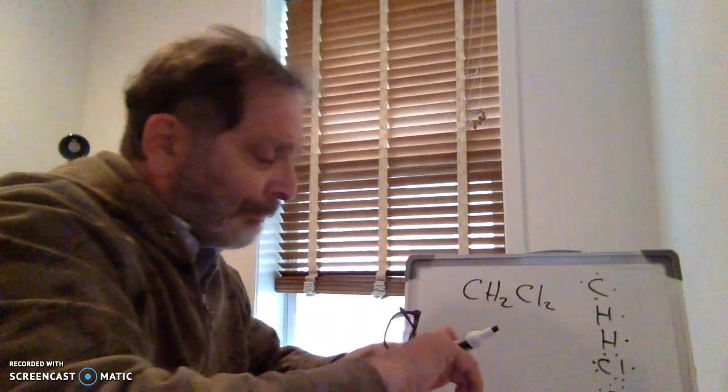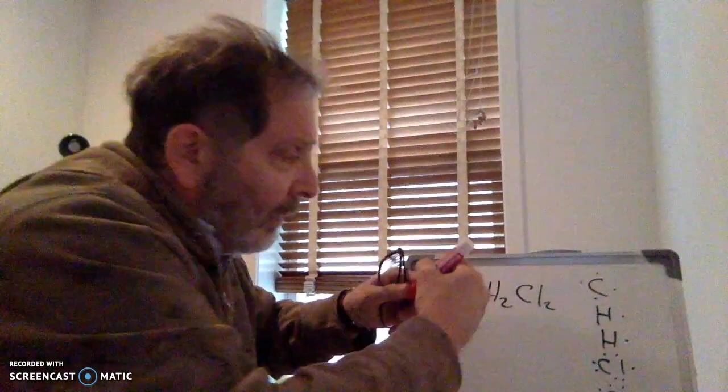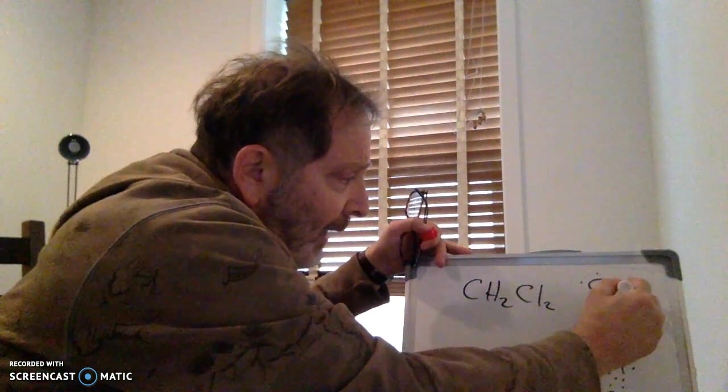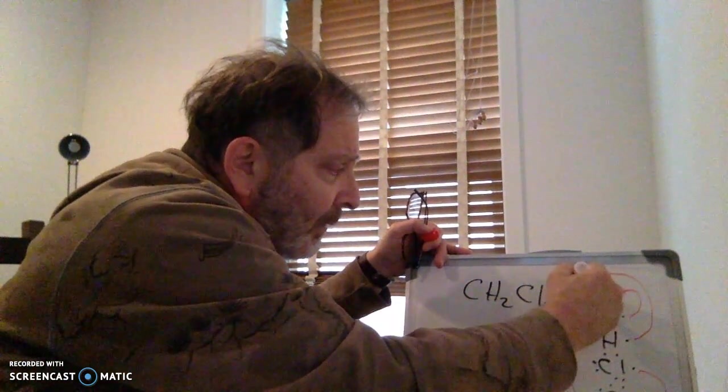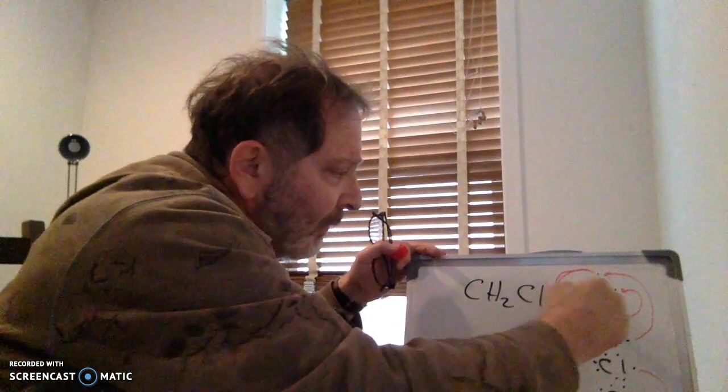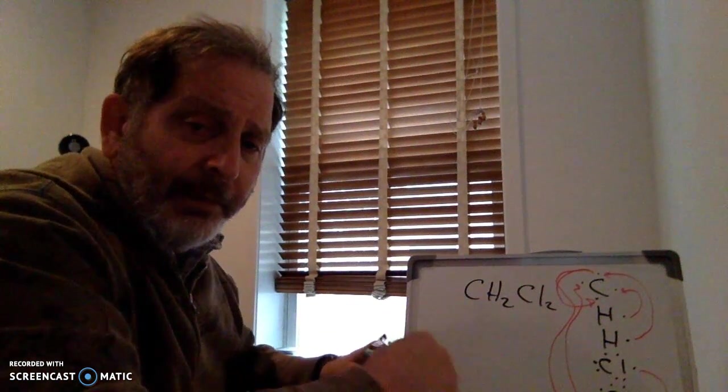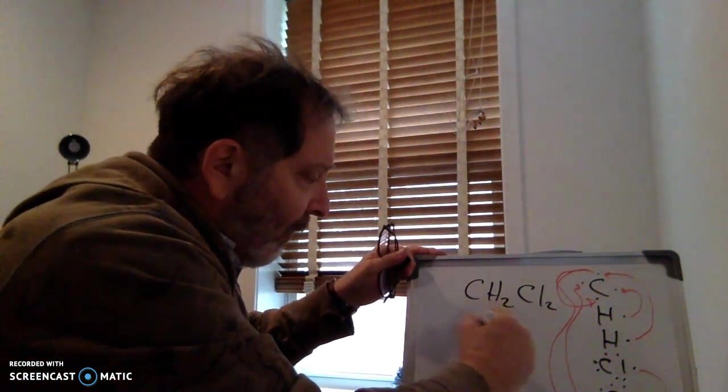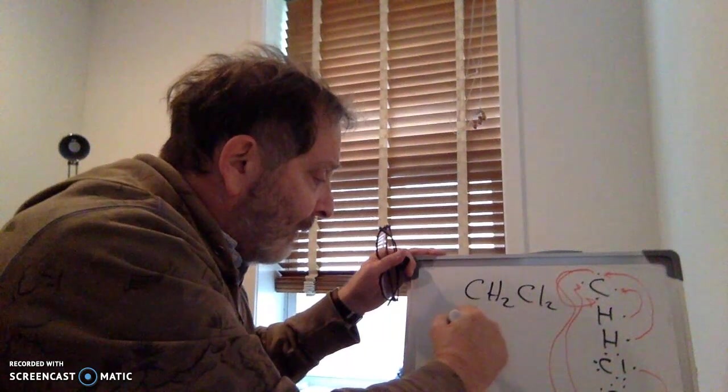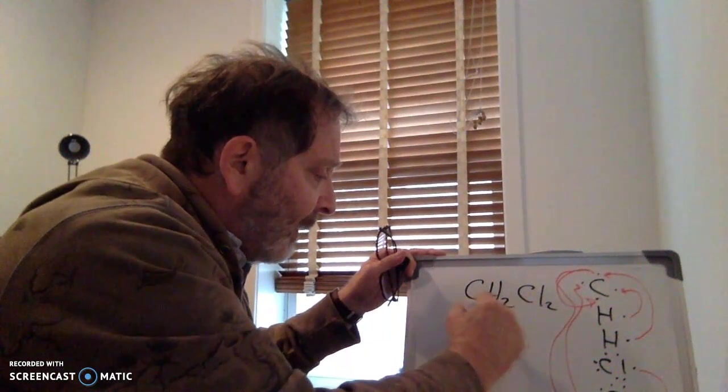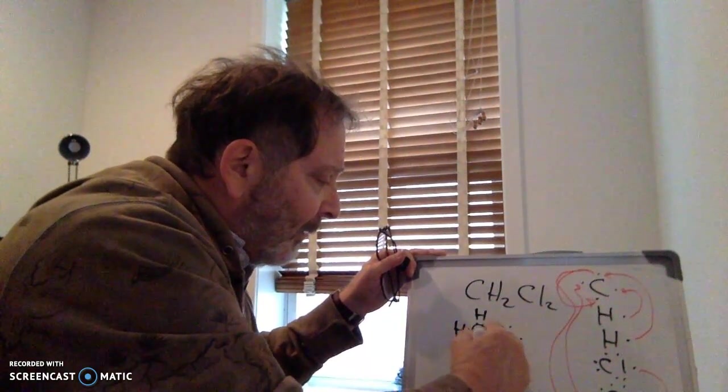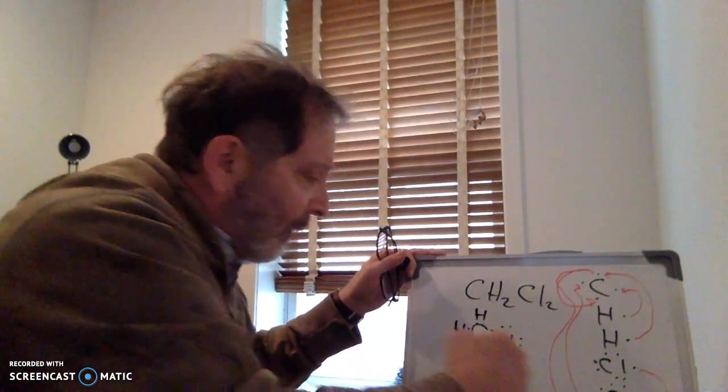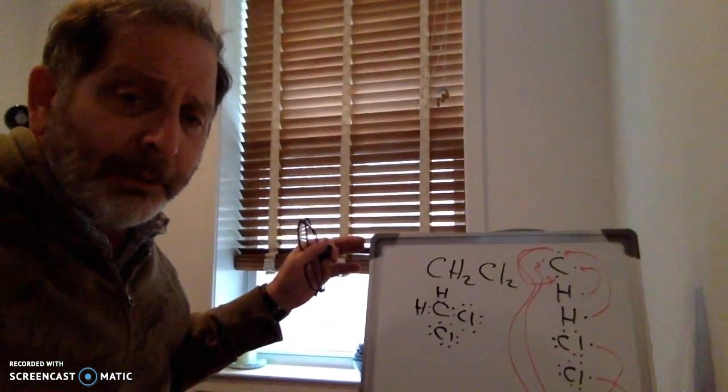You can see how this would work, visualize how this hydrogen can latch on here, and this can latch on there, and this one can latch on over here, and this one can latch on over here. When you assemble this entire structure, you get carbon in the center, and then surrounded by four atoms.